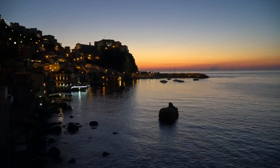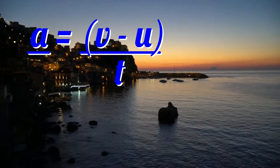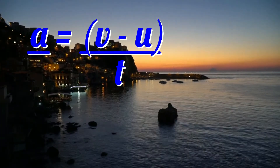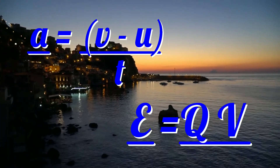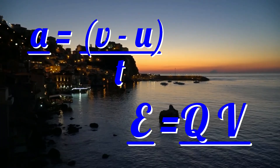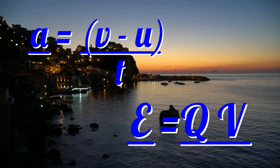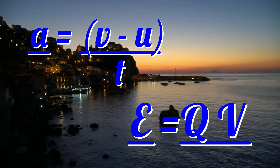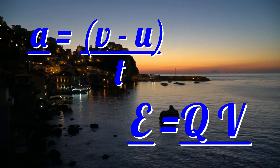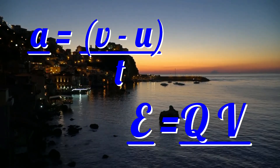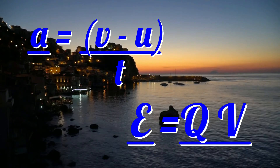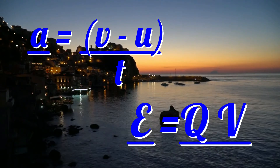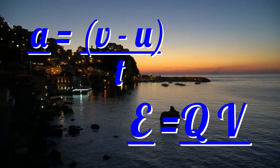This lesson's equations were A equals V minus U over T, and E equals QV. Please re-watch this video as many times as you need to make sure you succeed in your Physics GCSE and iGCSE.